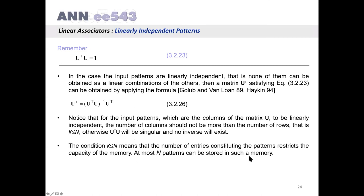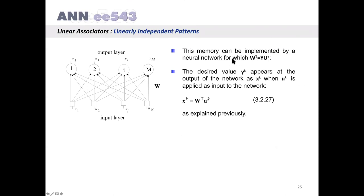The condition K ≤ N means that the number of entries constituting the patterns restricts the capacity of the memory — at most N patterns can be stored. This memory can be implemented by a neural network for which W^T = A* = Y · U^+. When uk is applied as input, the desired value yk appears at the output as xk, where xk = W^T · uk, as explained previously for the orthonormal case.